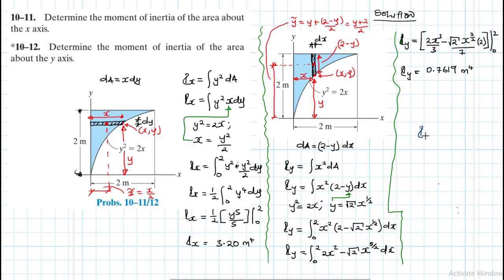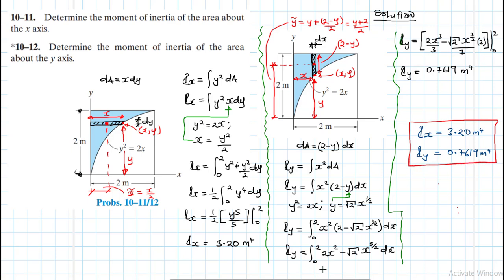So we have the moment of inertia about the x-axis equal to 3.20 meters to the power 4, and the moment of inertia about the y-axis equal to 0.7619 meters to the power 4. This is the final solution. I hope the video was helpful — if it was, give me a thumbs up, like my video, and subscribe. Check out my other videos on moment of inertia. Bye-bye, and see you in my next screencast.